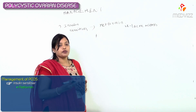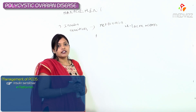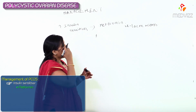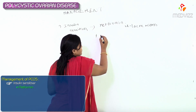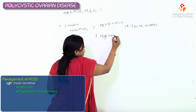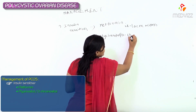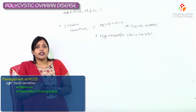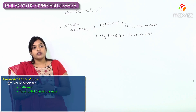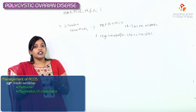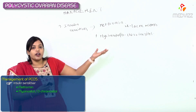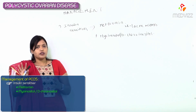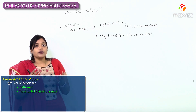I believe you should be updated with all recent advances. So there are recent insulin sensitizers called inositols — myo-inositol and D-chiro-inositol. These are inositol triphosphate secondary messengers which also increase insulin sensitization and decrease insulin resistance. Studies have shown they have decreased side effects and help with anovulation. That covers combating the first villain — insulin.